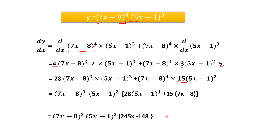Solving the bracket further, the final answer is (7x − 8)³(5x − 1)² · (245x − 148). The question was given as a product of two functions, and we applied the product rule to get the answer.